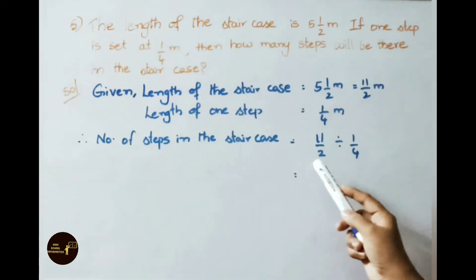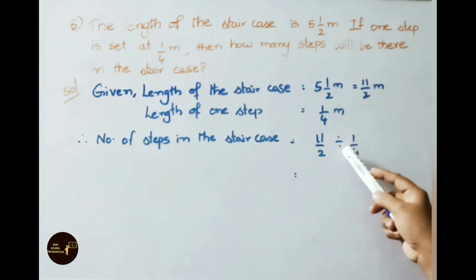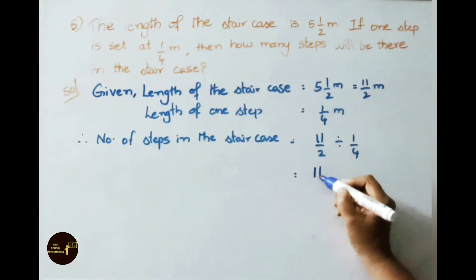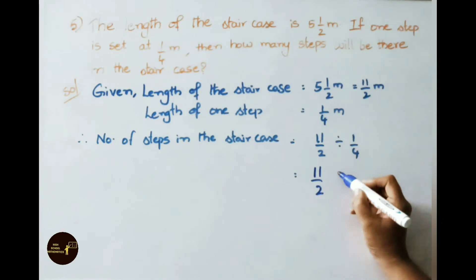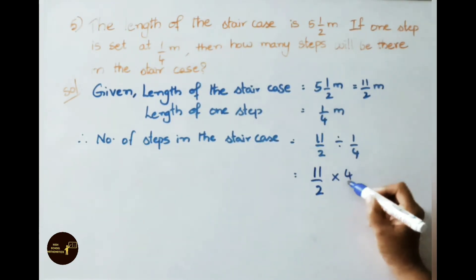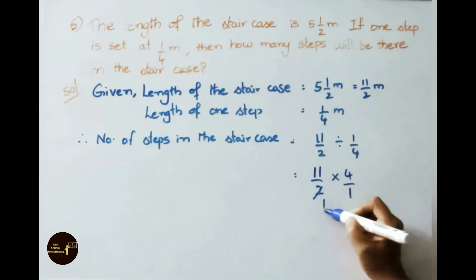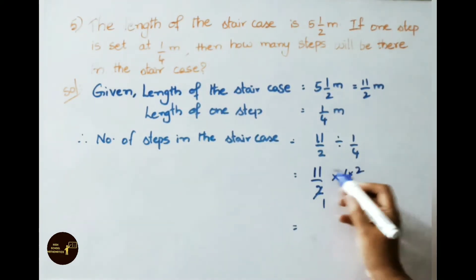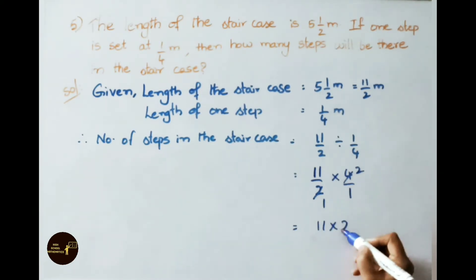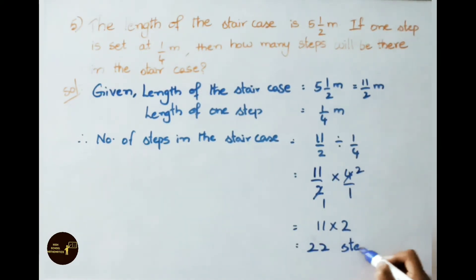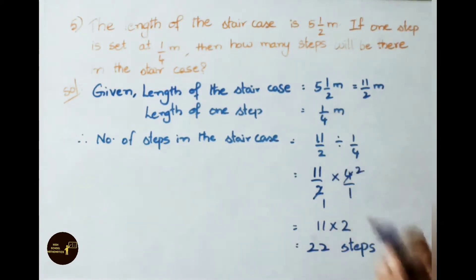Therefore, number of steps in the staircase equals 11 by 2 divided by 1 by 4. Changing division to multiplication and writing the reciprocal of 1 by 4 as 4 by 1: 11 by 2 times 4 by 1. The 2 and 4 simplify, giving 11 times 2 over 1, which is 22. Therefore, there are 22 steps present in the staircase.